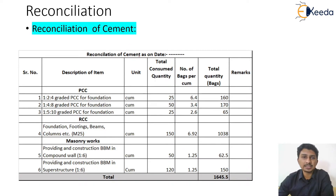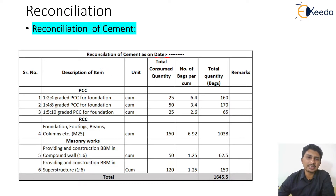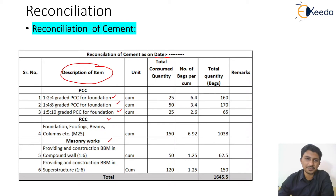Reconciliation of cement — as mentioned at the start of the sheet, you need to keep a track of material extra usage or wastage on a per running account bill basis. Because of this, you are in control — you know that every month or every running account bill you are adding this much wastage of material. On site, the description of items will be very lengthy; I have curtailed it down for better understanding to the simplest form of PCC, RCC, and masonry work only. So what is the reconciliation sheet going to tell us?